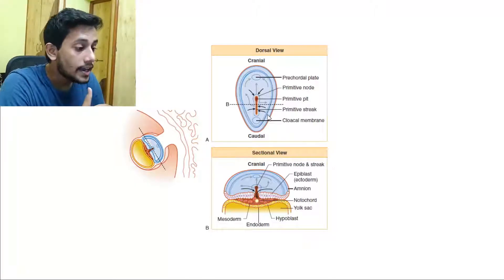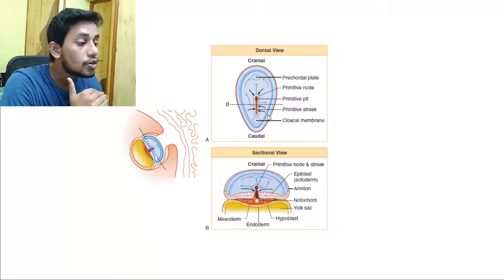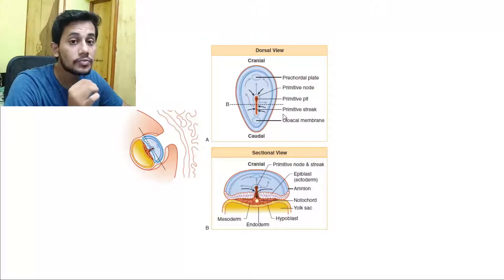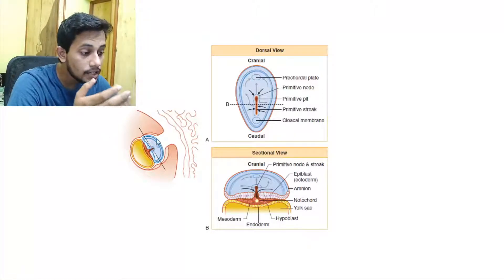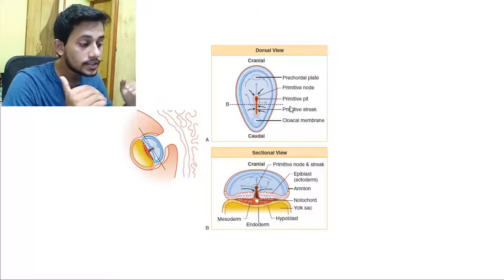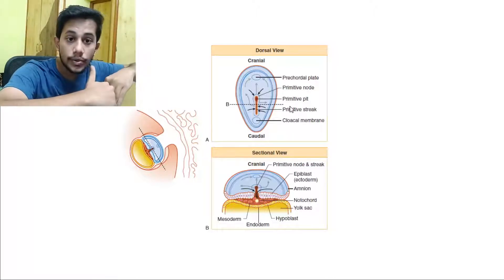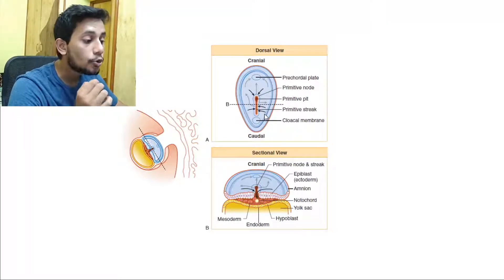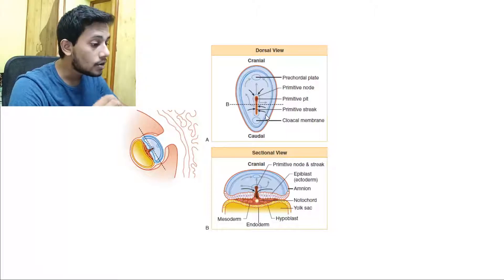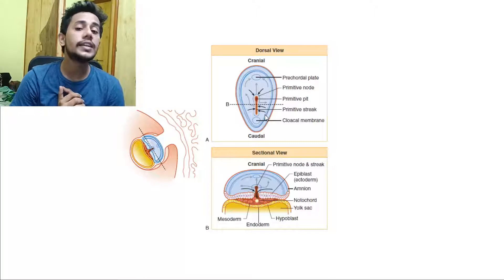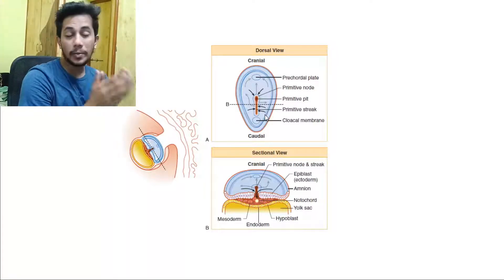All these arrows indicate the epiblastic cells — the blue-colored cells from the epiblast — trying to migrate and move into the primitive streak. They try to go through it and invade it. So all the arrows represent epiblastic cells moving into the primitive streak.